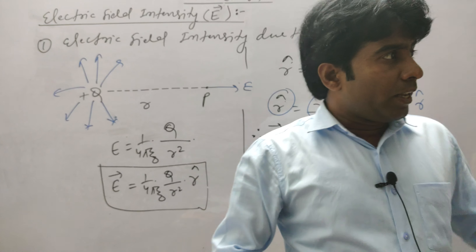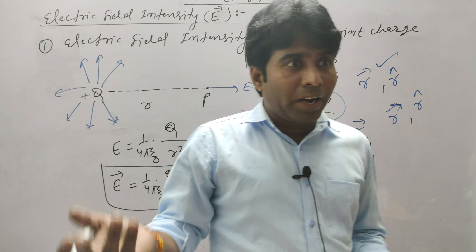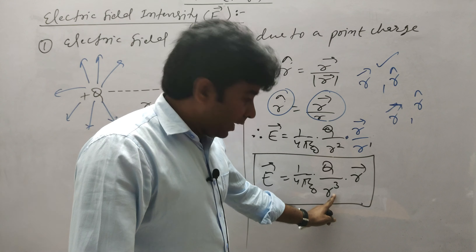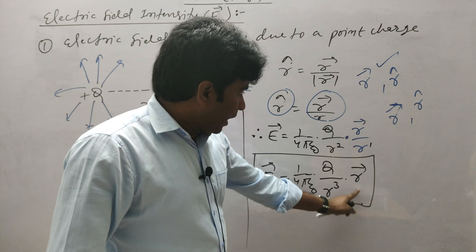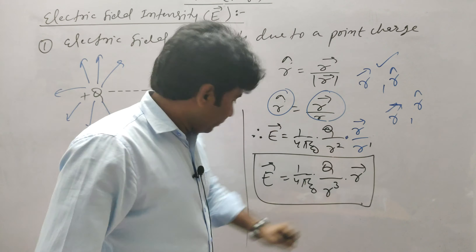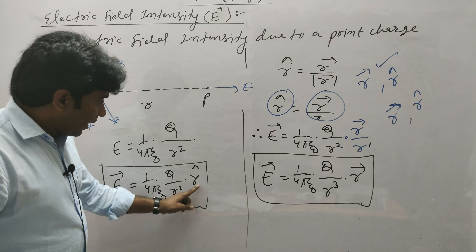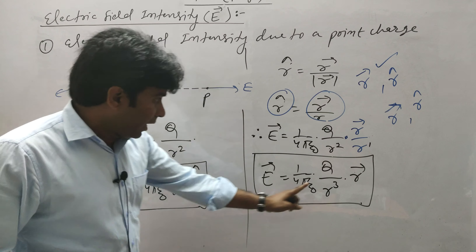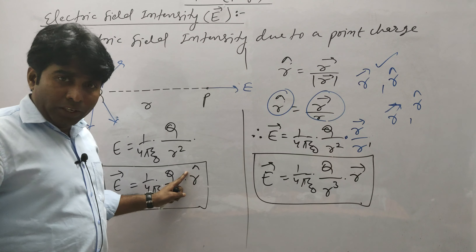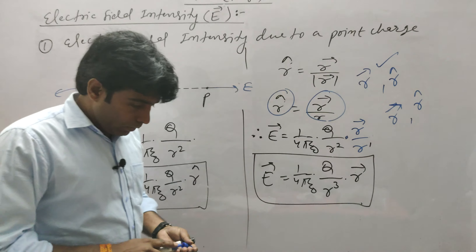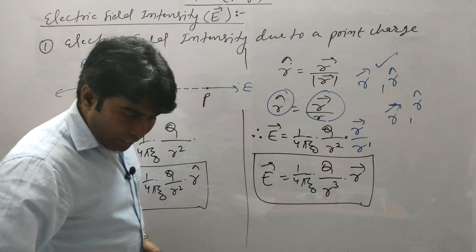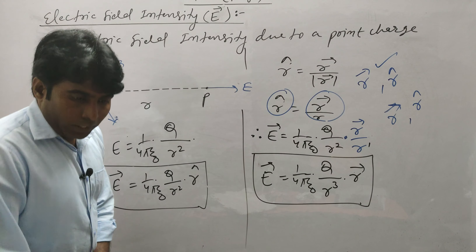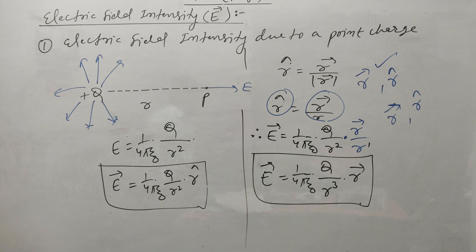To summarize the vector form: if you see R square in the denominator, then the direction vector is the unit vector R̂; if you see R cube in the denominator, then the direction vector is vector R⃗. This is the key difference — R̂ is a unit vector with magnitude 1, while R⃗ has some magnitude. Confusion is now gone. Next, we will discuss electric field intensity due to multiple charges.